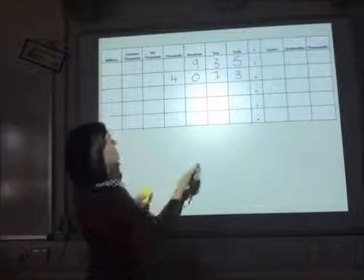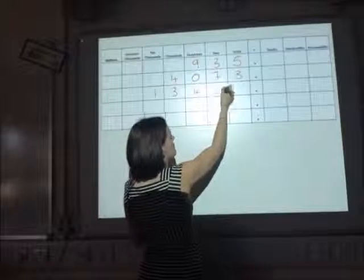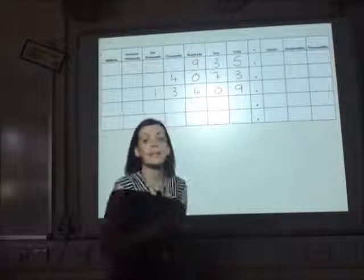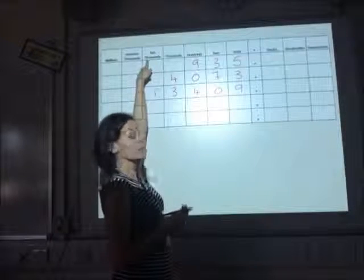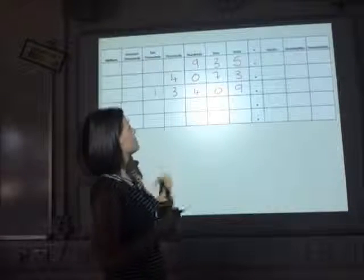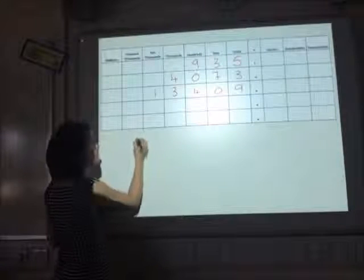Writing numbers that are already given in figures then, so we've got 13409, and I can see that the 1 is in the 10,000s column, so I've got 10,000, but the 3 is in the thousands column, so I've got 3 more thousands. That's 13,000 altogether.